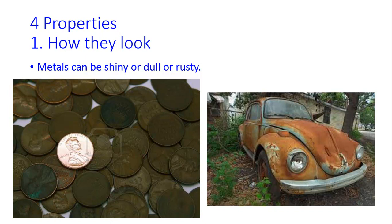You're going to be responsible for four properties at the M1EP level. One, the first one, is how they look. So metals can be shiny or dull.